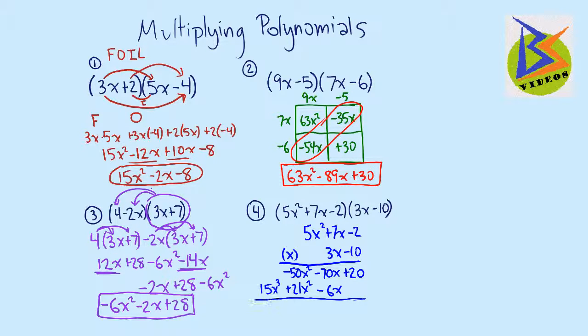Now what we need to do is just add these up, like our traditional multiplication problems. So a negative 70x minus 6x is a negative 76x. Negative 50x squared plus 21x squared. Since they're different signs, we're going to subtract them. And so we're going to get a negative 29x squared. And then we drop down the 15x cubed. And then again, there's nothing else we can do because there's no like terms left in here. And so any four of these strategies will work when you're multiplying polynomials.